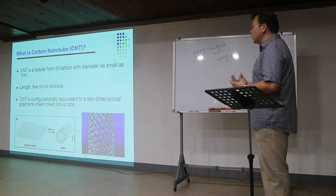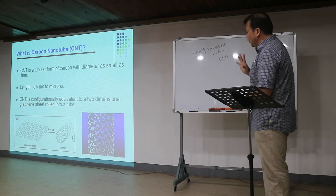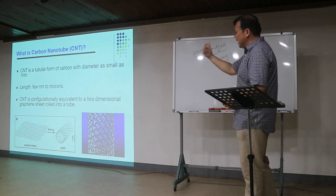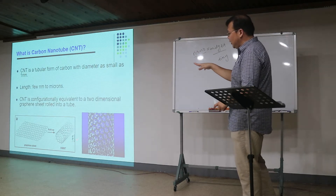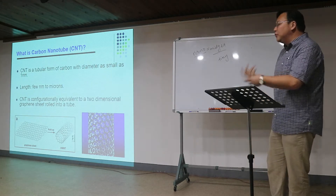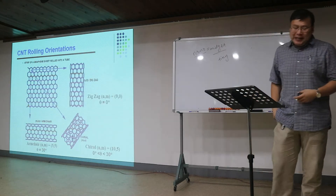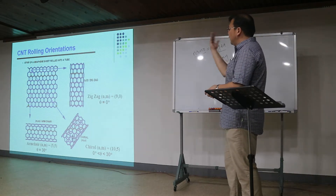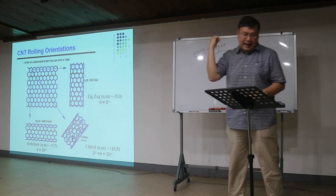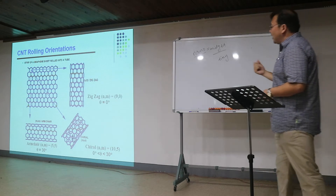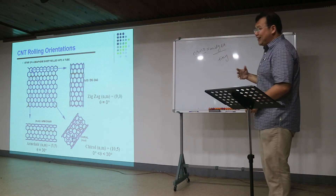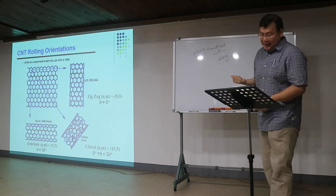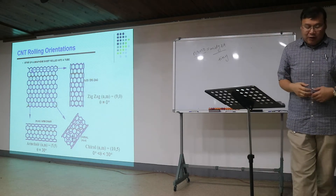Carbon nanotubes have a very hollow structure, and in the wall structure you could see hexagon structures or hexagon patterns. Normally we could transform from the 1D graphene sheet into 2D single nanotubes if you roll them over. Depending on the rolling orientation, you may roll a graphene sheet in the horizontal direction to form a zigzag carbon nanotube, in the vertical direction to form an armchair carbon nanotube, or diagonally to form a chiral structure carbon nanotube.